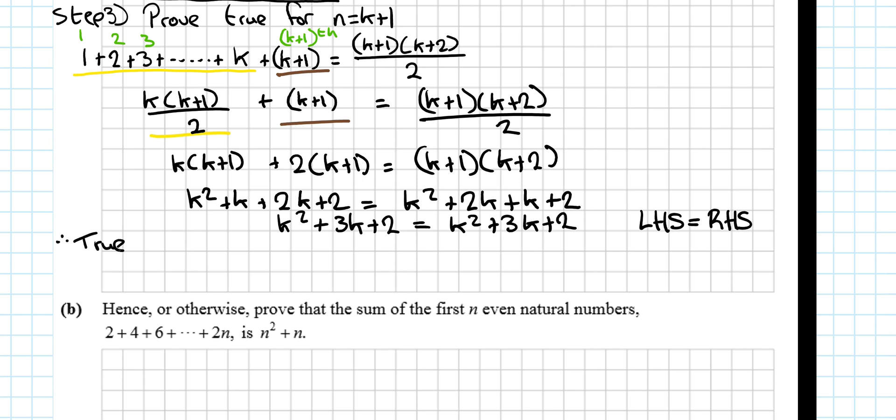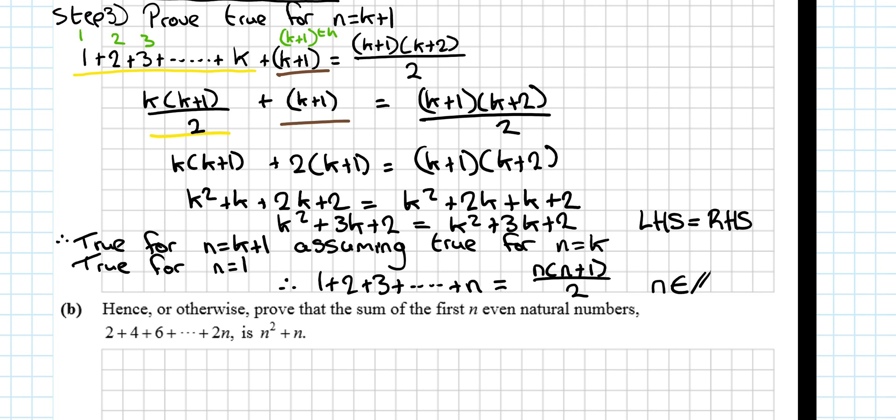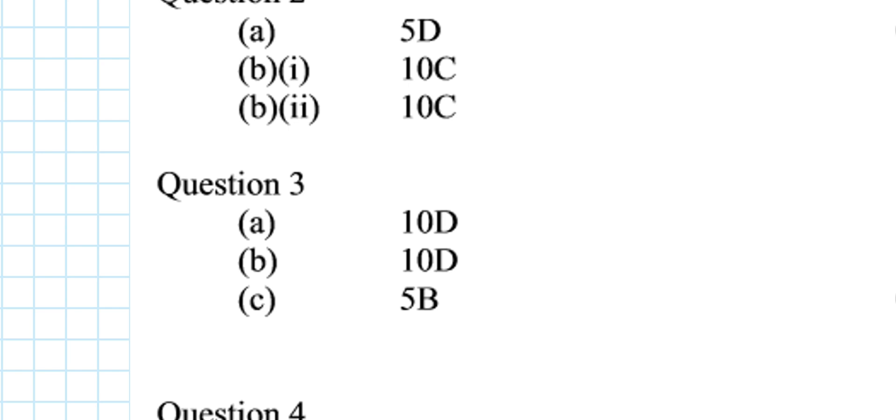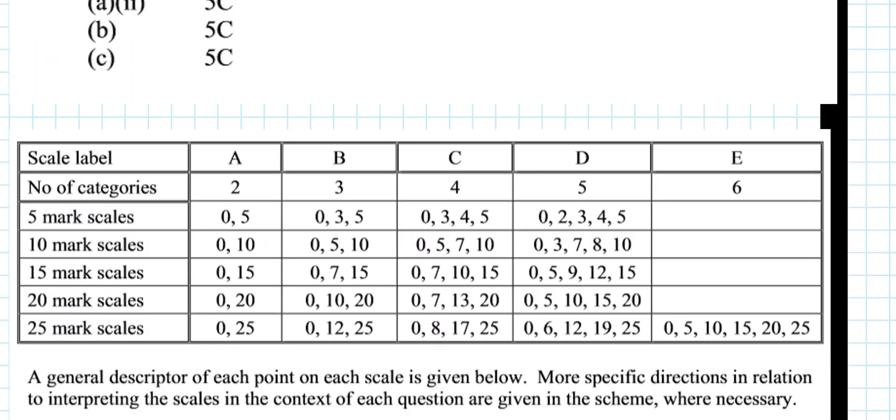And therefore, true for n is equal to k plus 1, you must include this or the last statement. Assuming true for n is equal to k, we know it's true for n is equal to 1. Therefore, 1 plus 2 plus 3 plus dot dot dot plus n is equal to n by n plus 1 over 2, for all n's and elements of the natural numbers. How many marks going for that question then? So, the marking scheme for question 3 part A is a 10D, and what that means then, that it is a 0, 3, 7, 8, 10 question.